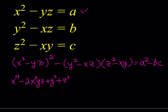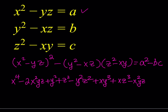From this, I subtract Y squared Z squared — so those cancel. Then multiplying out the remaining terms with negation: positive XY cubed, positive XZ cubed, and negative X squared YZ. And of course this is equal to A squared minus BC.